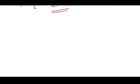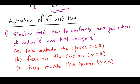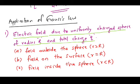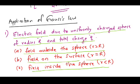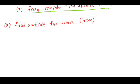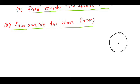Now let us discuss the application of Gauss's law. The first application: find the electric field due to a uniformly charged sphere of radius R with total charge q. We address three cases: the field outside the sphere (r > R), the field on the surface (r = R), and the field inside the sphere (r < R).